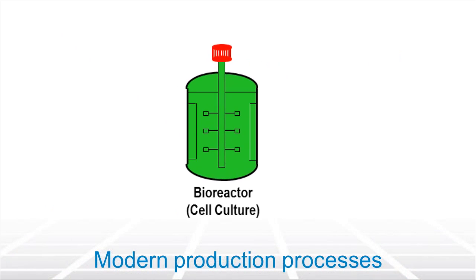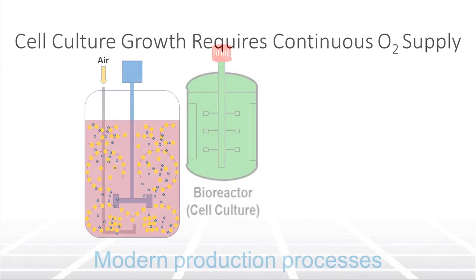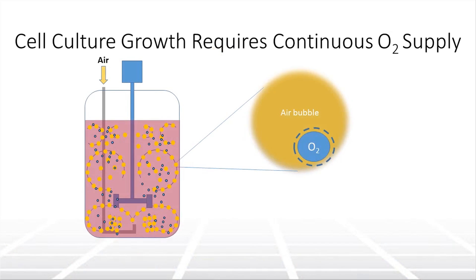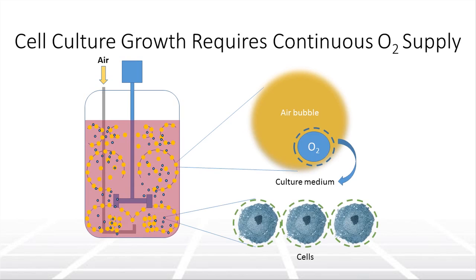Many factors impact cell culture, and one of those is aeration. One of the most important functions within a bioreactor is the delivery of oxygen to cells through a process called aeration. This is normally done through sparging of air followed by mixing.